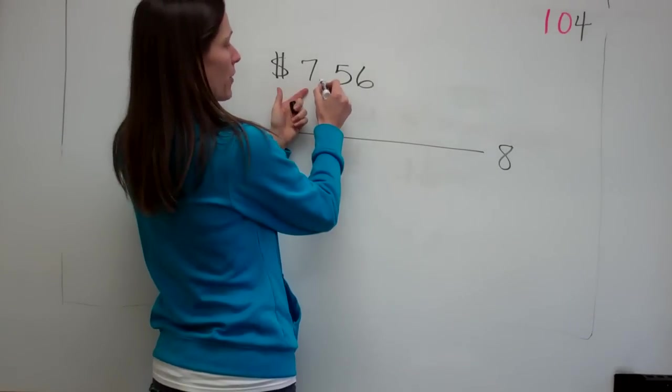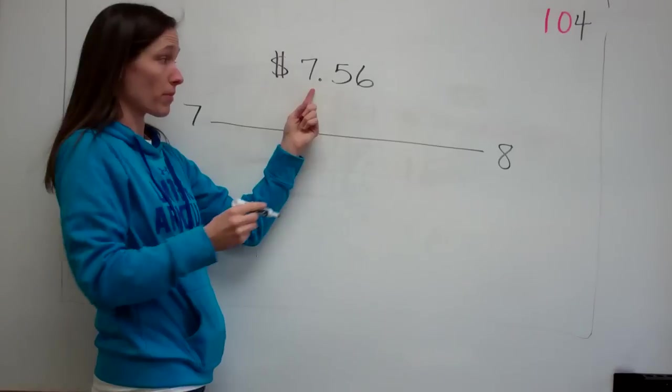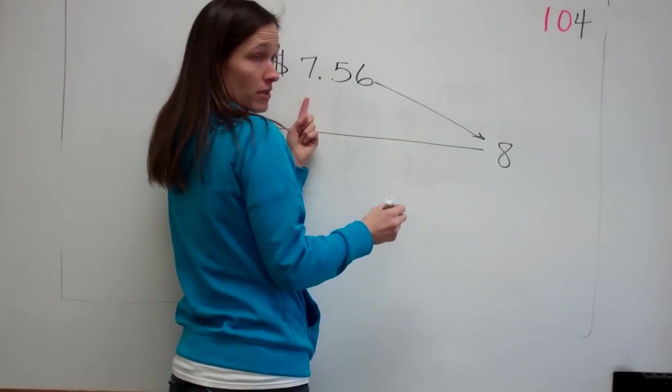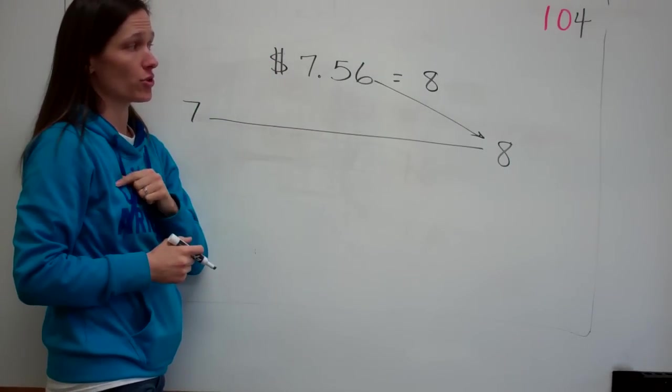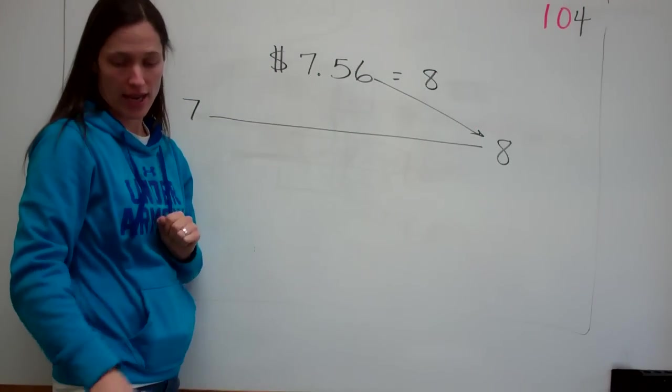We would say we're going to round this decimal number to eight, right? So the answer for seven dollars and fifty-six cents, if we rounded it to a whole number, we would say eight, right? Okay.